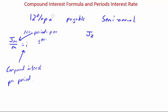So because 12% per annum is payable semi-annually, we know that there must be two periods per year. So j2 is where you are payable semi-annually.